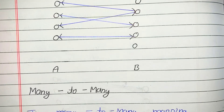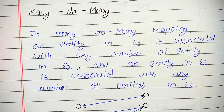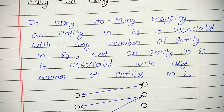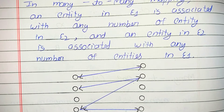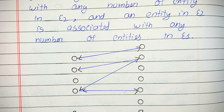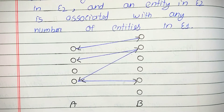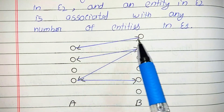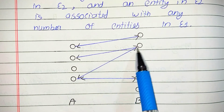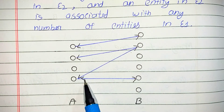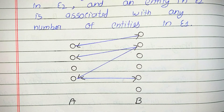Now moving on to the fourth one — many to many. In many to many mapping, an entity in E1 is associated with any number of entities in E2. Here the diagram shows many connected to many. Entity 1 is connected to Entity 2's second point, and also this entity is connected to another entity. This is the many to many mapping.